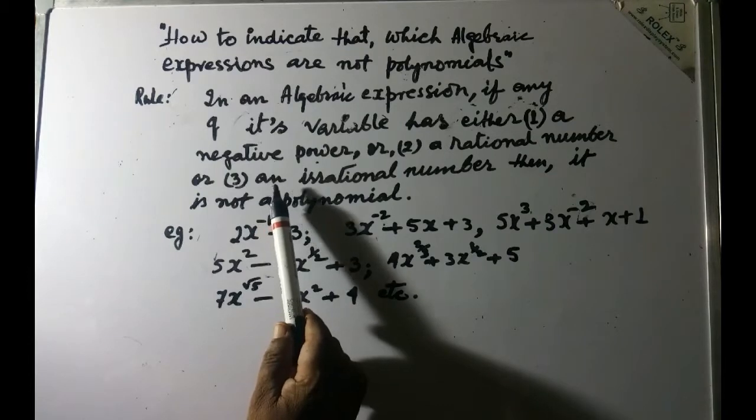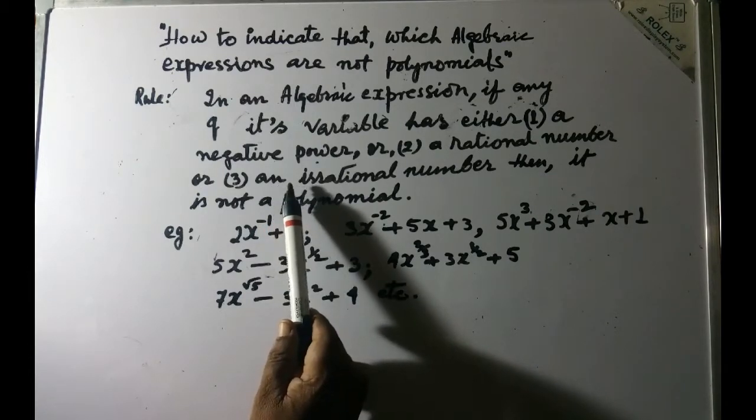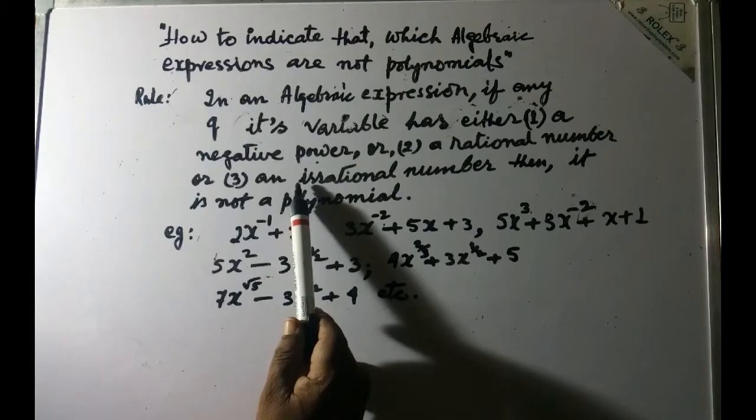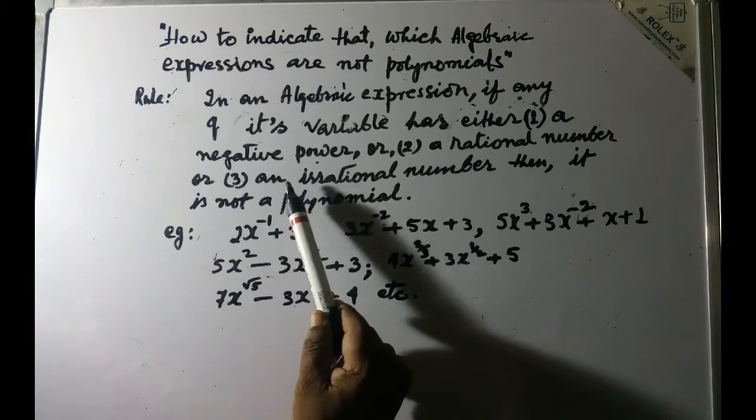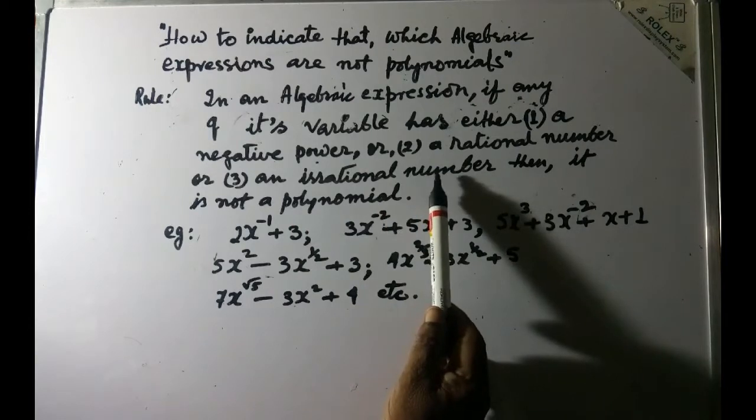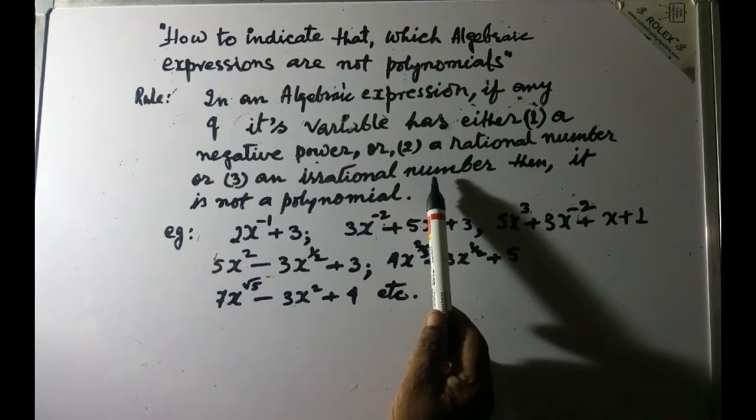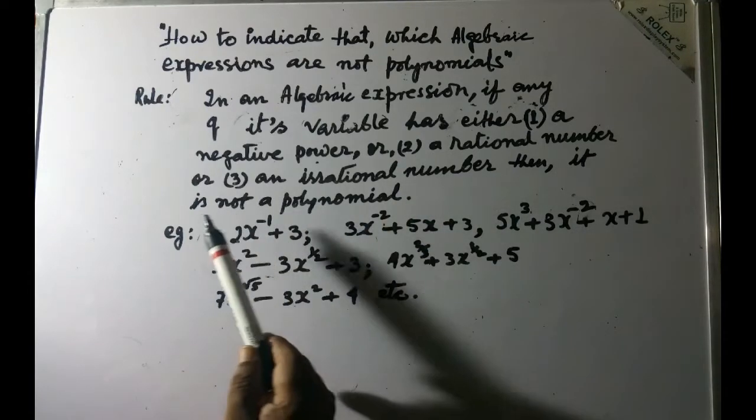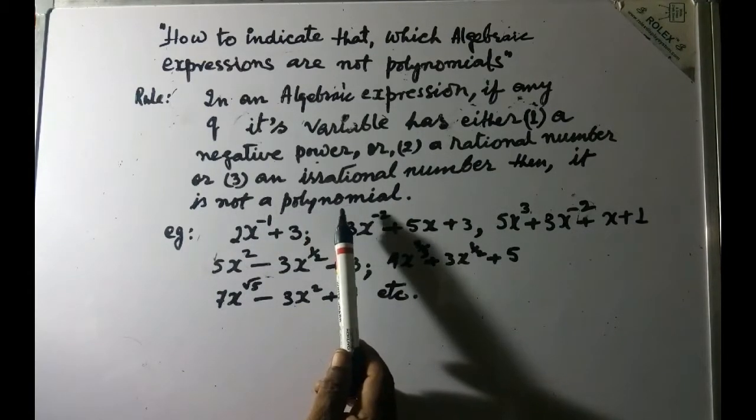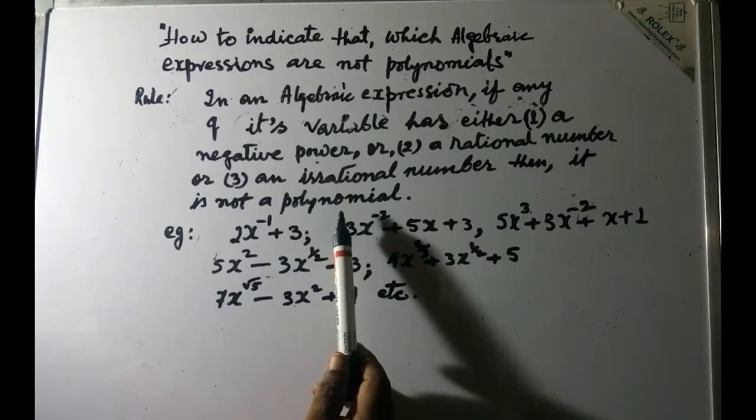Or again if you find that the power of the variable, any one variable, has an irrational number, I mean the power is an irrational number, then also it is not a polynomial.